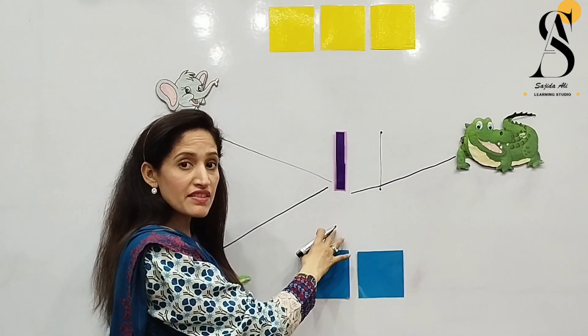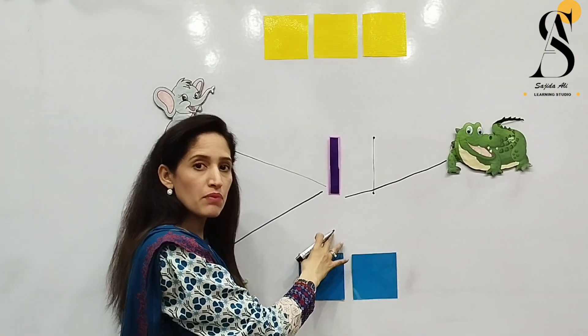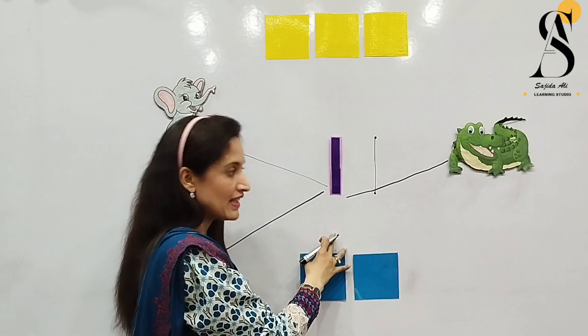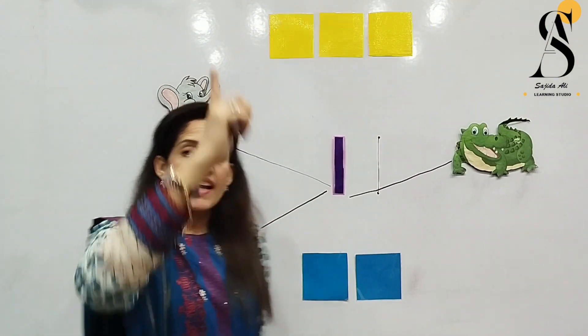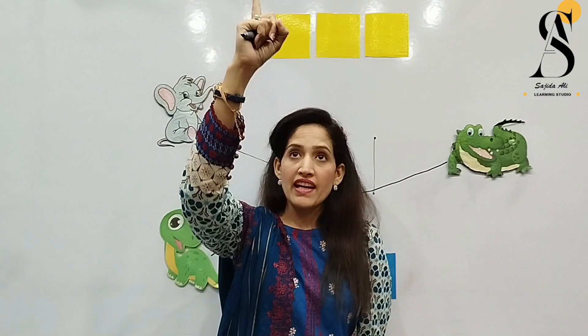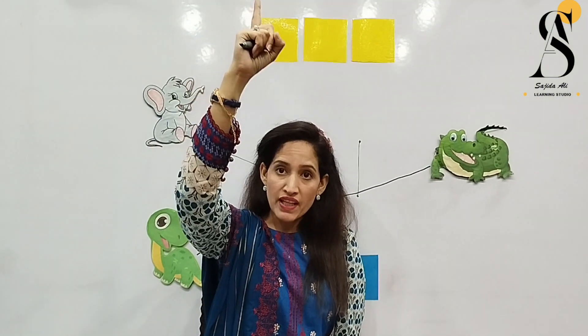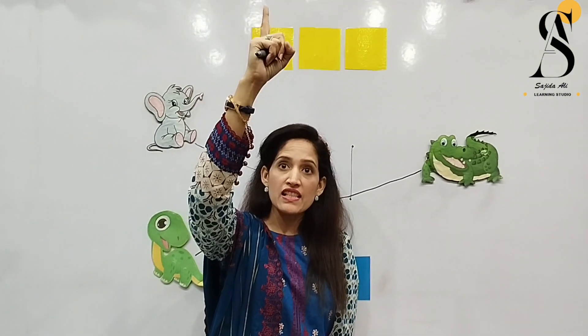So which number have we learned today? Number one. Can you draw number one in the air like this? One. Thank you so much.